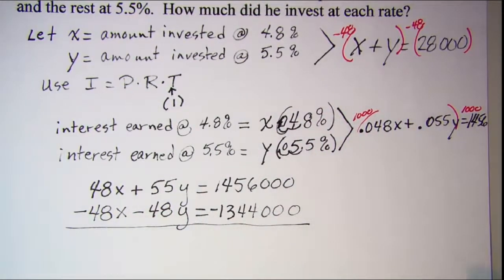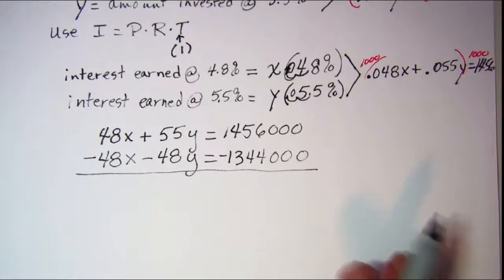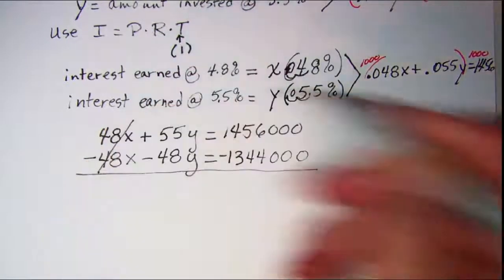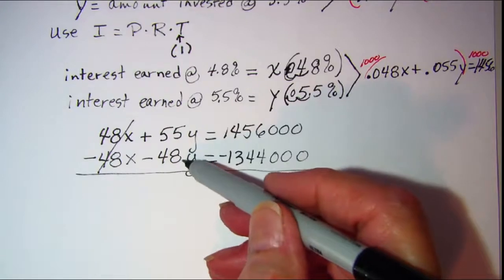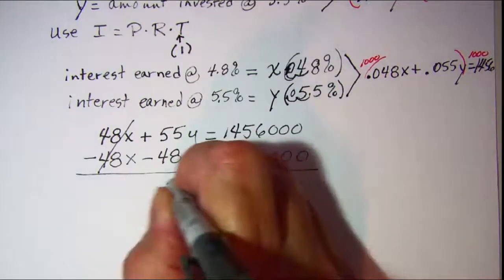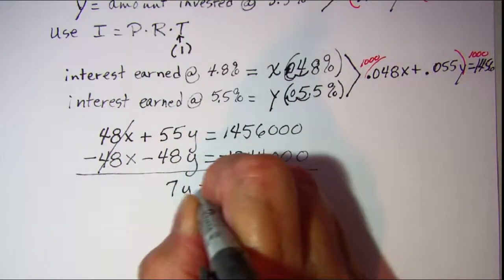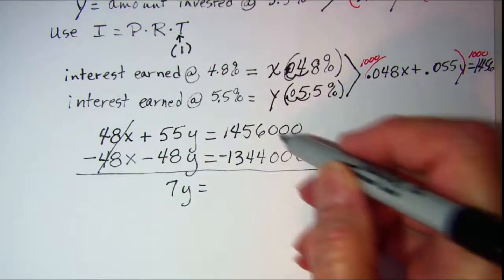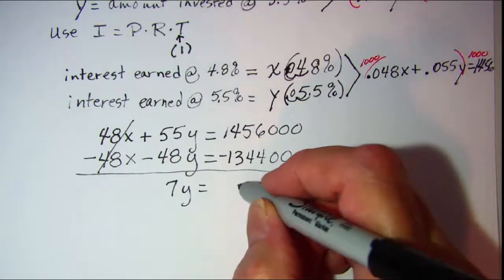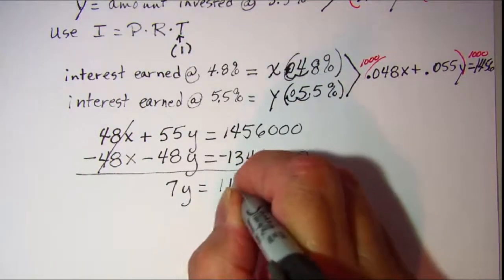Now when I add these together, these will go away. 55y subtract 48y gives me 7y, and then here I can subtract and get 112,000.